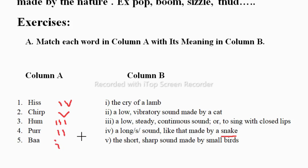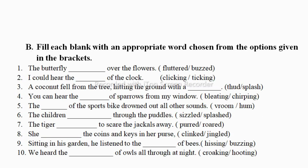So this is your first exercise. Let's do the next exercise. Here, fill each blank with an appropriate word chosen from the options given in the brackets. Near the exam, they'll give you two options and you have to choose the correct one. The butterfly dashed over the flowers — what is the sound made by the butterfly's wings? Buzzing or fluttered? Buzzing is the sound made by bees, but the butterfly's sound is fluttered.